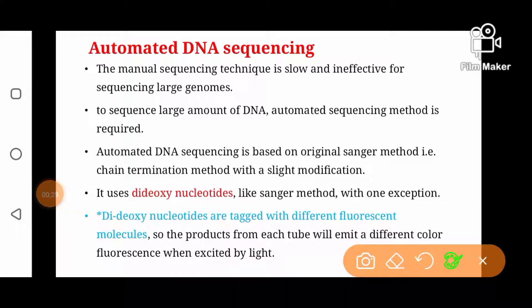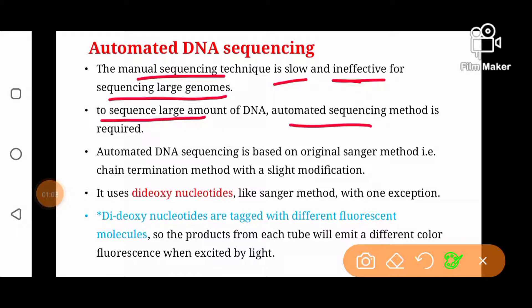That manual sequencing method is slow and ineffective for sequencing larger genomes. For example, if we want to sequence the human genome by the basic Sanger method, it will take a lot of time — maybe years — because the process of fragment reading in that manual method is very time-consuming, tricky, and tedious. So to sequence larger amounts of DNA or larger genomes, automated DNA sequencing methods are required.